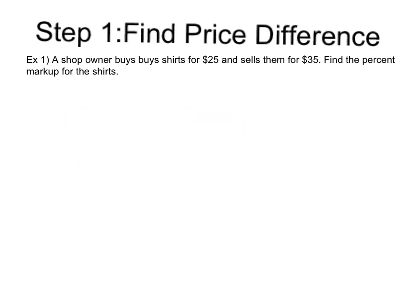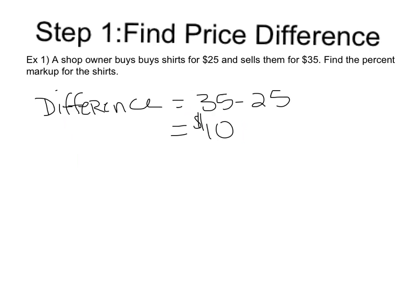The first thing we need to do is find the difference in price from the original cost to the cost they're selling the item for. We're always going to use the absolute value of the cost. If the amount is going up, we say it's increasing; if it's going down, we say it's decreasing. We can also use markup or markdown when talking about money. So $35 minus $25 gives us a difference of $10.